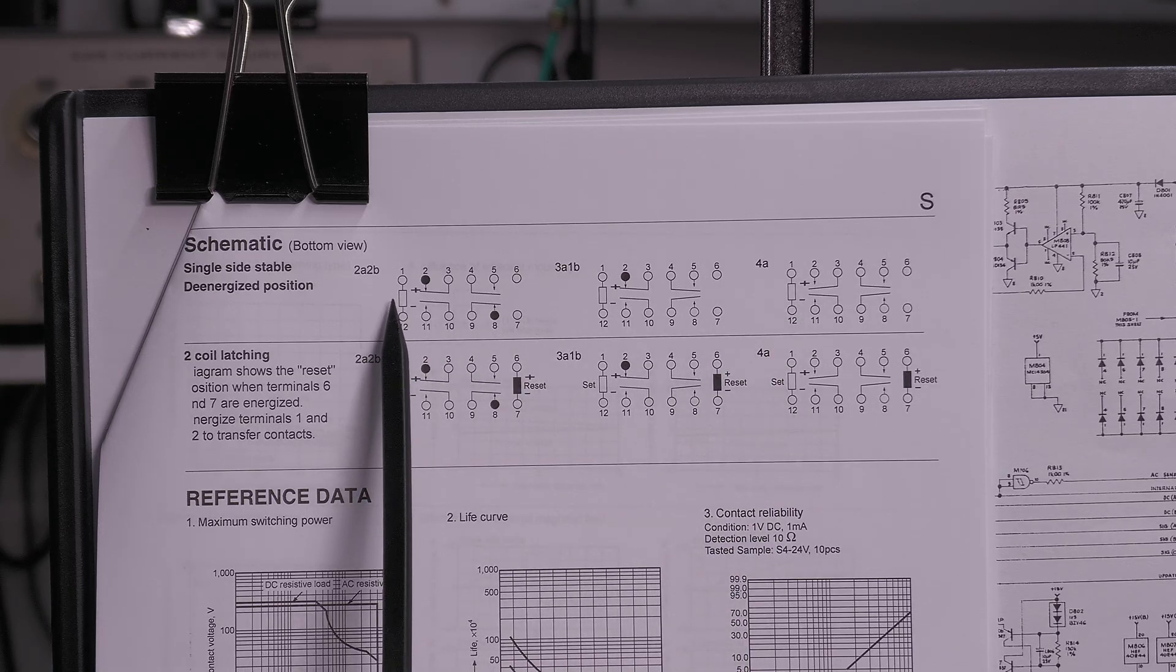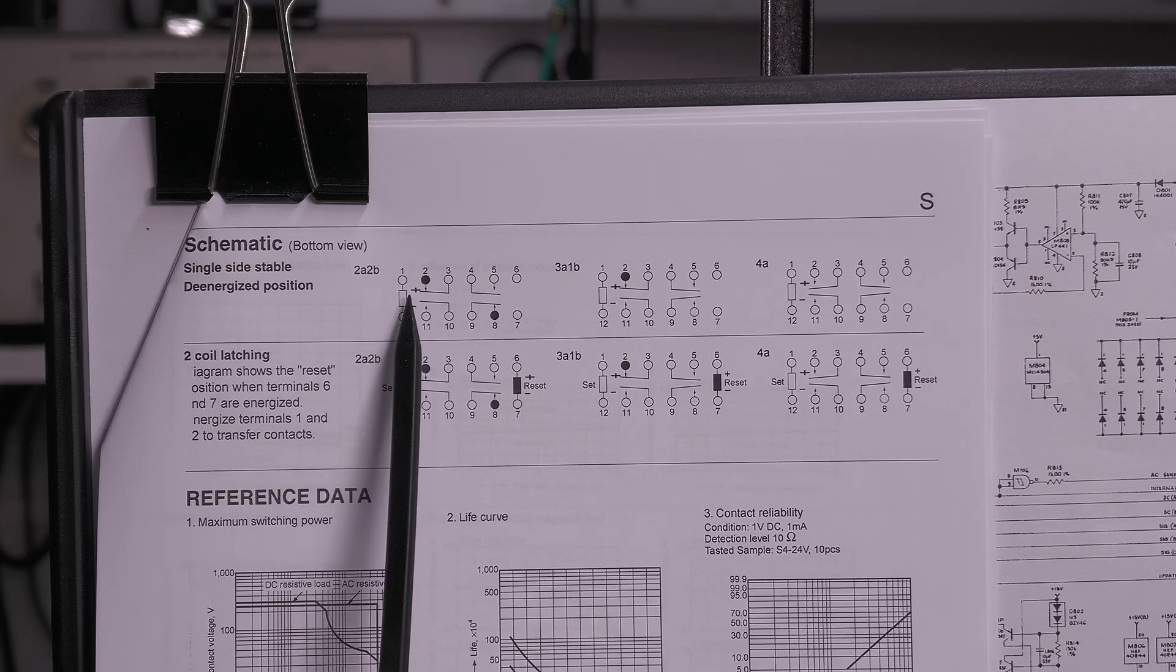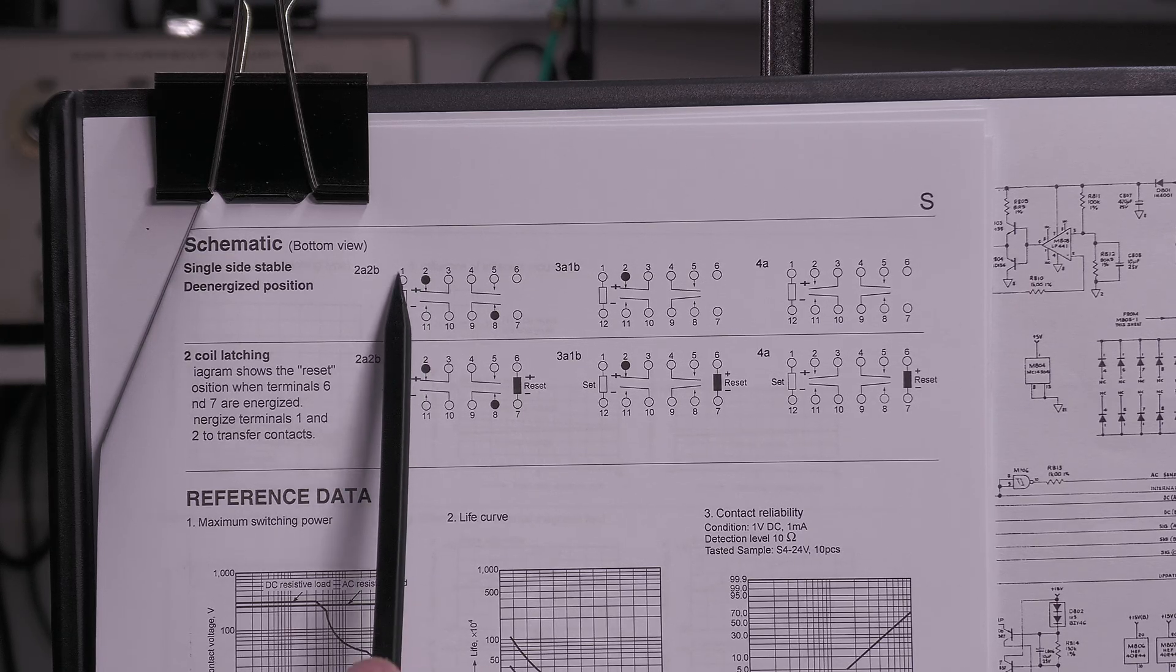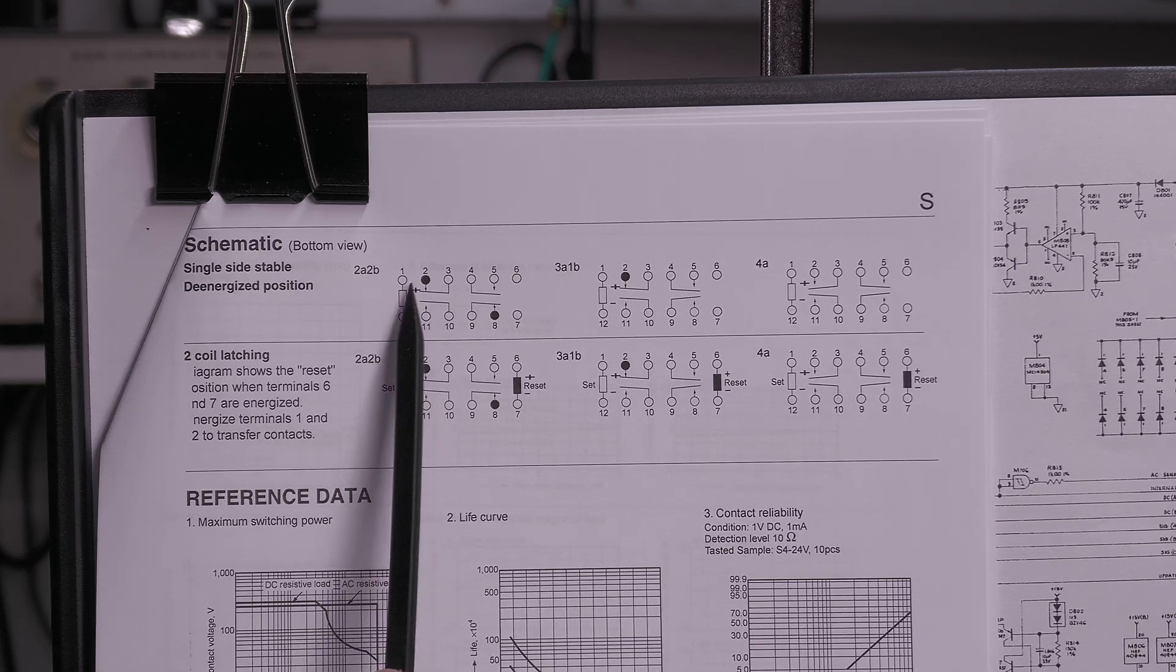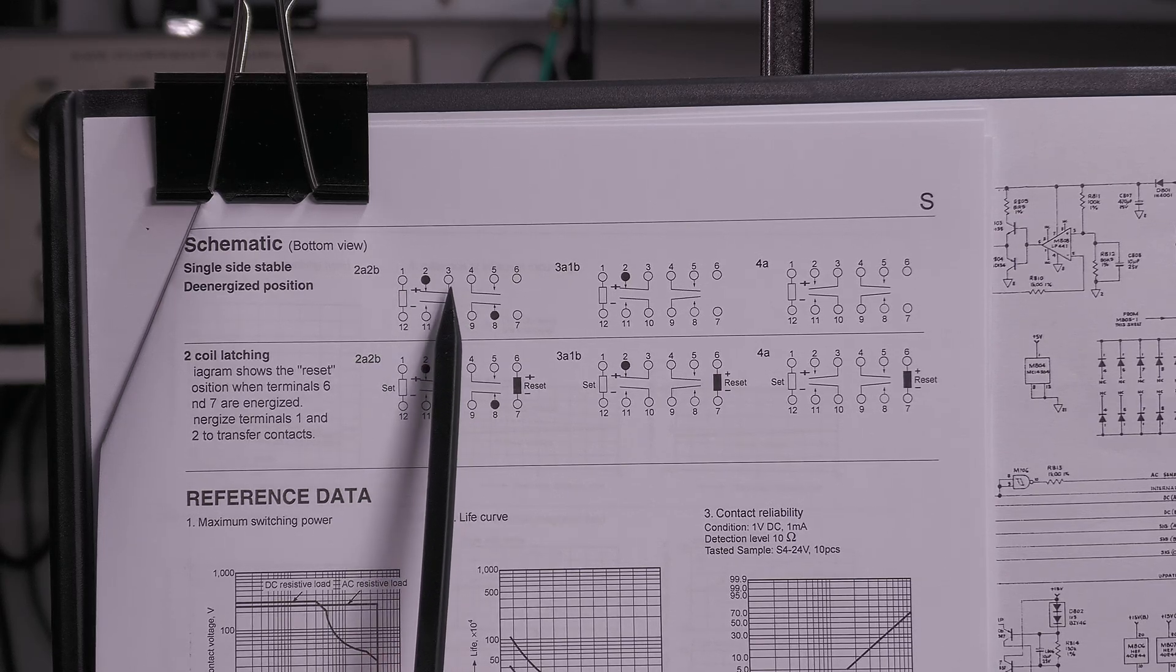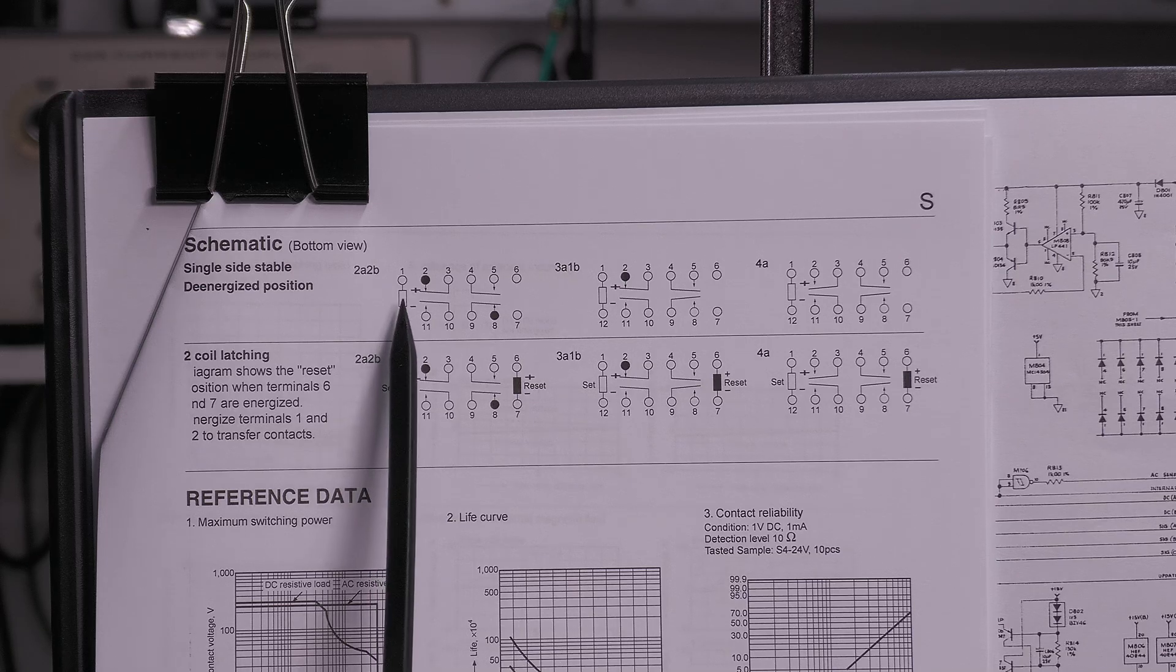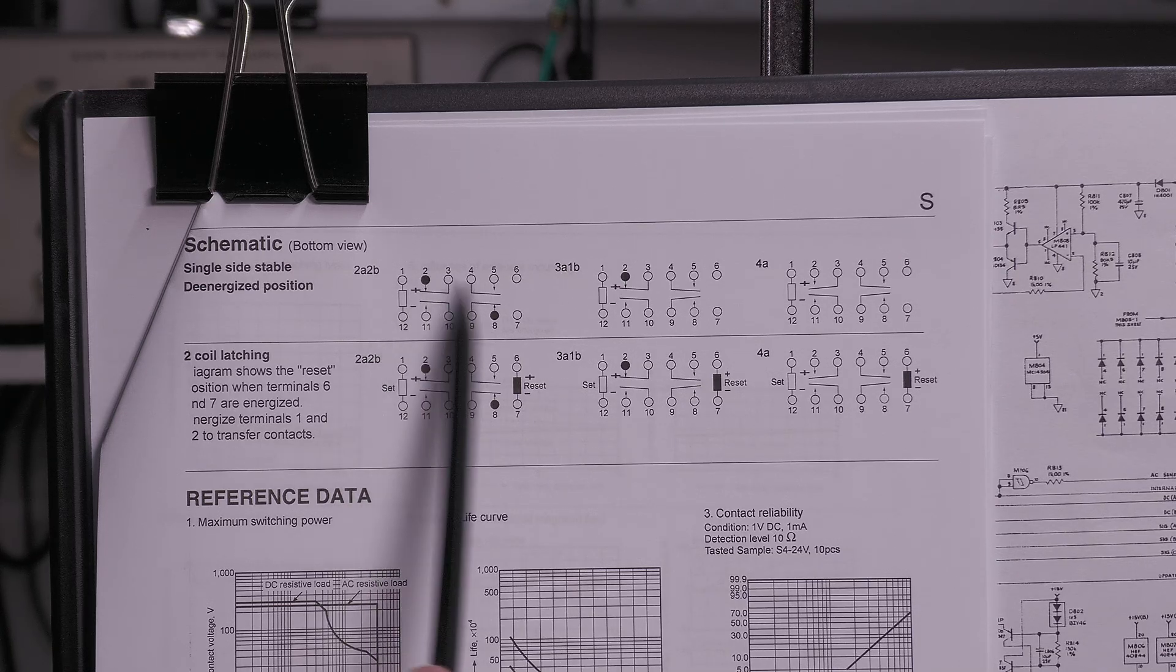At first look you think a single coil relay isn't going to be latched, but in actual fact they are latched. In order to set them you put a positive polarity across the coil, and to unset them you reverse that polarity. So the 1281 must be continuously reversing the polarity across the coil in order to turn the contacts on and off.